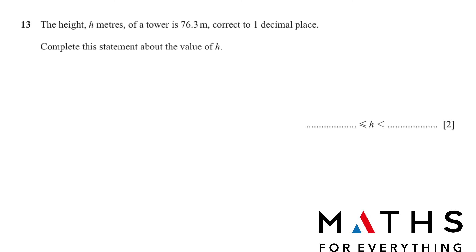Question number 13. The height h meters of a tower is 76.3 meters correct to one decimal place. Complete the statement of h. So we have to write the upper bound and the lower bound or the limits of accuracy. We have to write correct to one decimal place. Remember this very well.